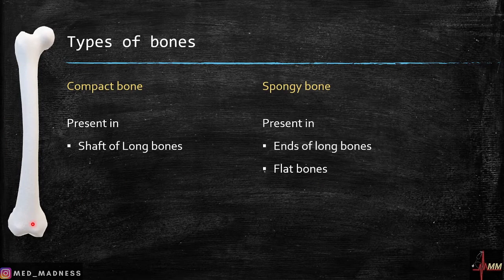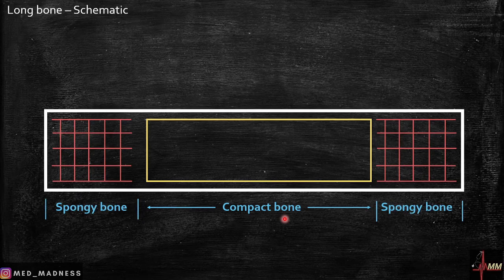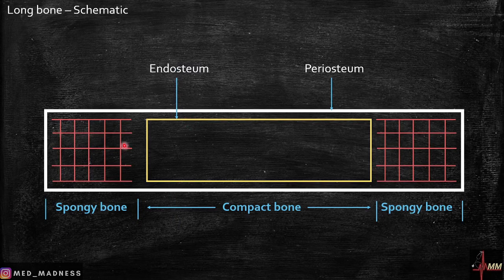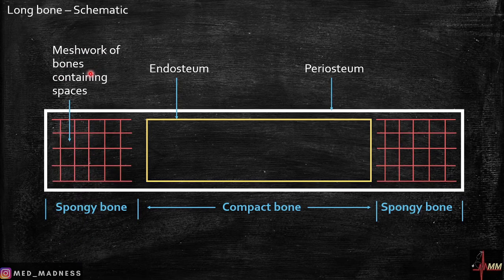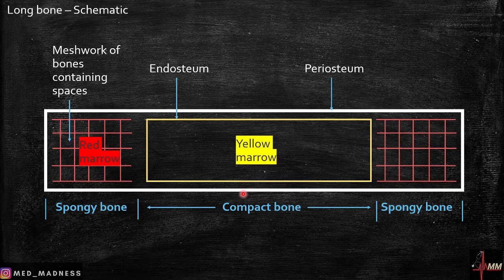Let's see a schematic representation of the bone so these structures become very clear. Here is the long bone: this is the compact bone and here is the spongy bone. The compact bone is covered by periosteum. There is a cavity in the compact bone filled with bone marrow, and this cavity is lined by endosteum. In the spongy bone you have a meshwork of plates with spaces containing bone marrow — yellow marrow here and red marrow here, where blood-producing cells are found.